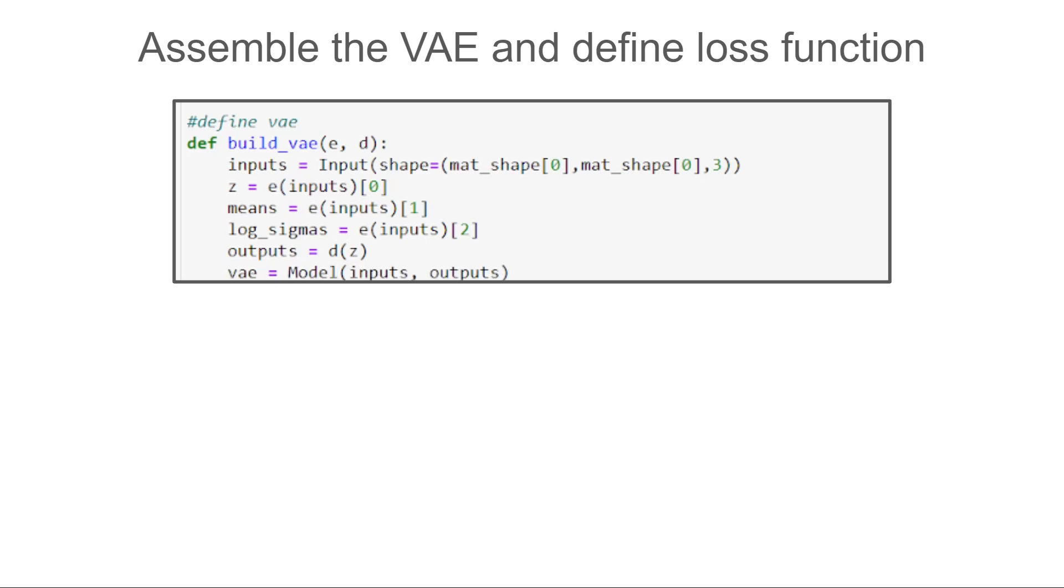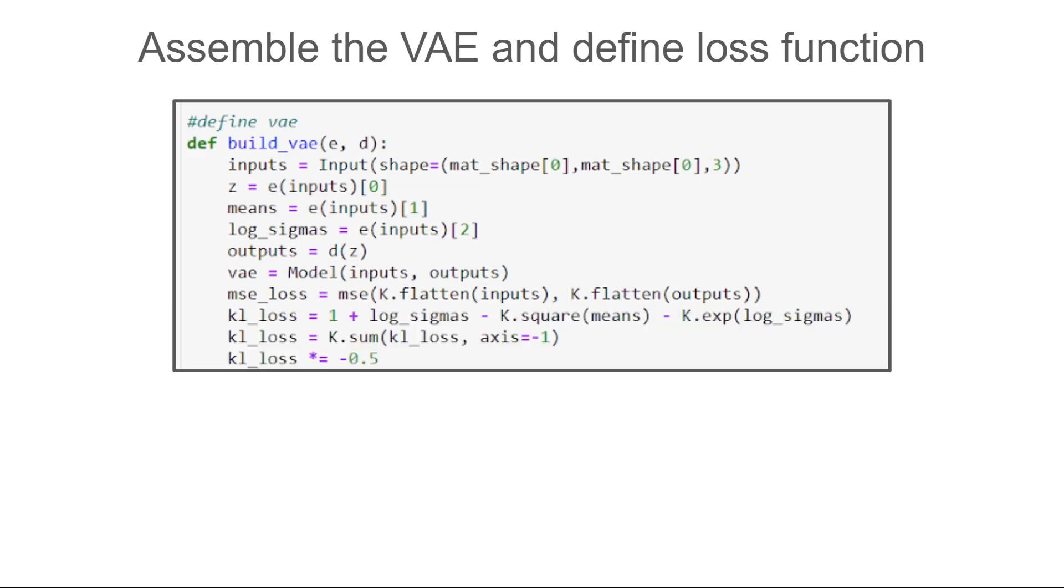Only one thing is left to define and it's the loss function. The mean squared error part is easy. Keras already has an implementation for this. The KL term is calculated using the expression given in the loss function slide from before. Only new thing here is the use of the logarithm of the variance instead of just the variance. The reason for that is that sometimes the variance might be very small and using the log of these values will create bigger values that are better handled by the network. I use the mean of the two terms instead of the sum, but there is no real difference.